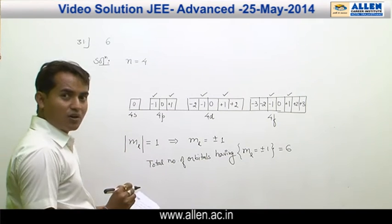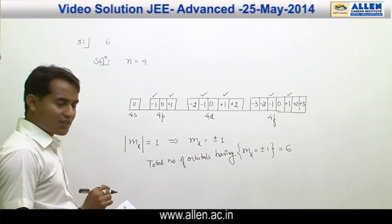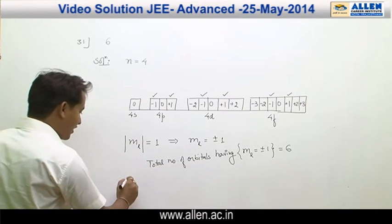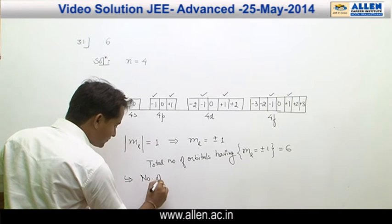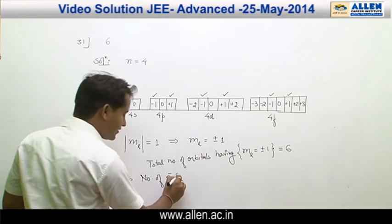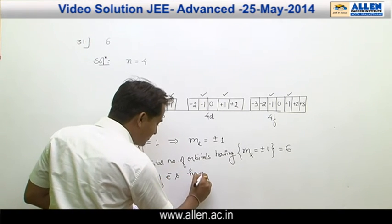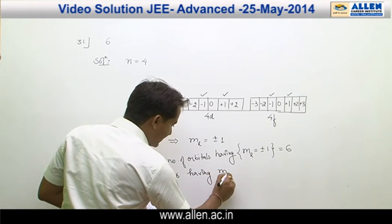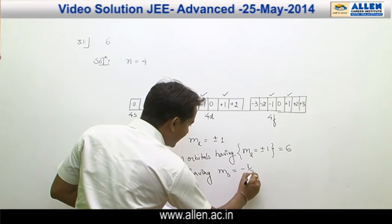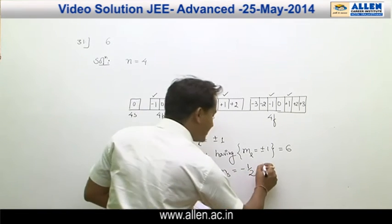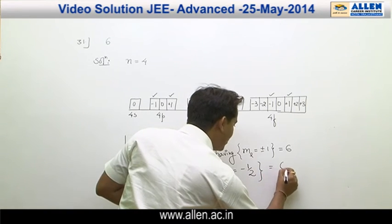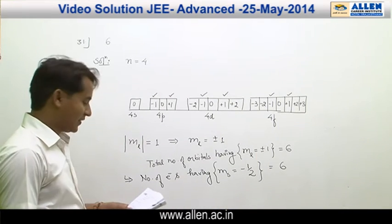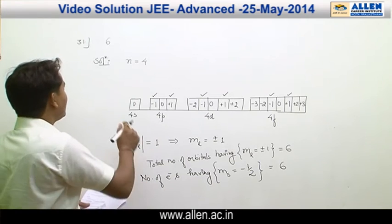Each orbital contains two electrons with opposite spin, and we have to calculate only the number of electrons in these orbitals having m_s equal to minus half, which is equal to 6. Therefore, answer would be 6.